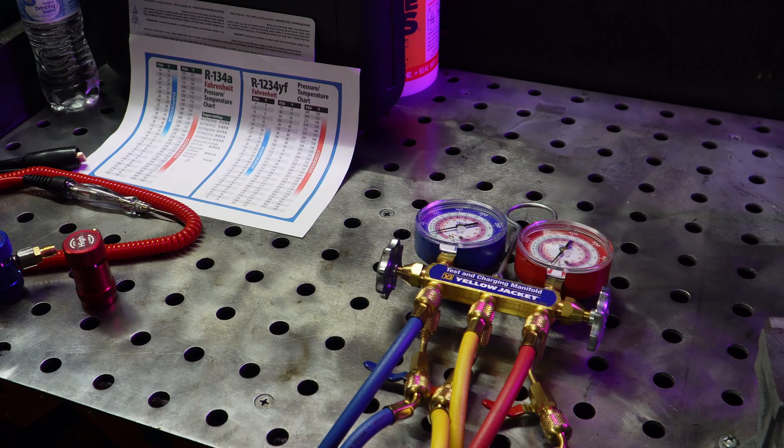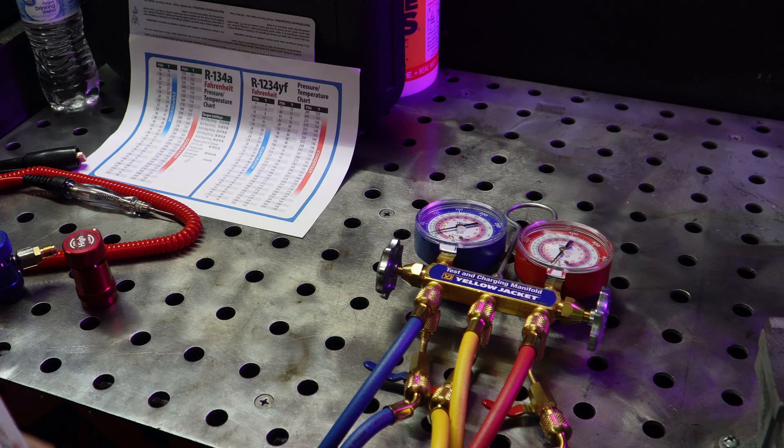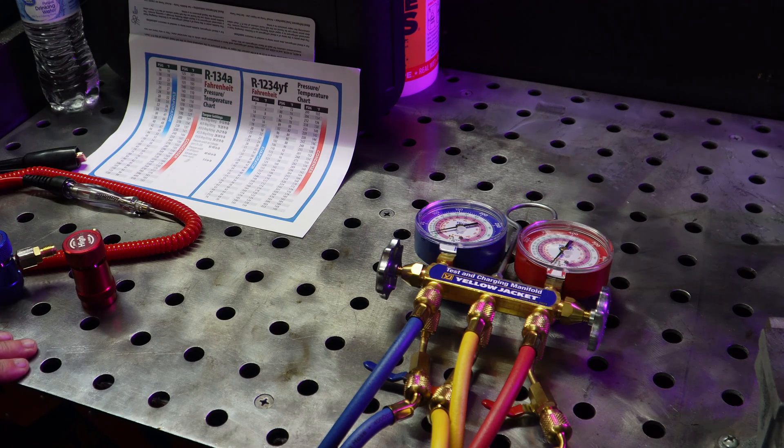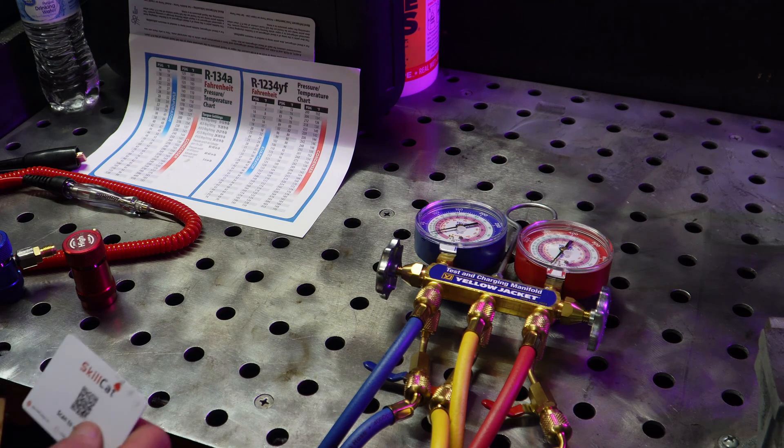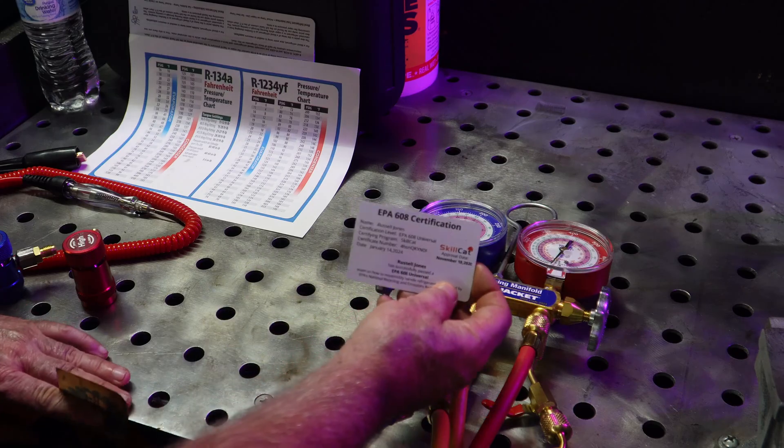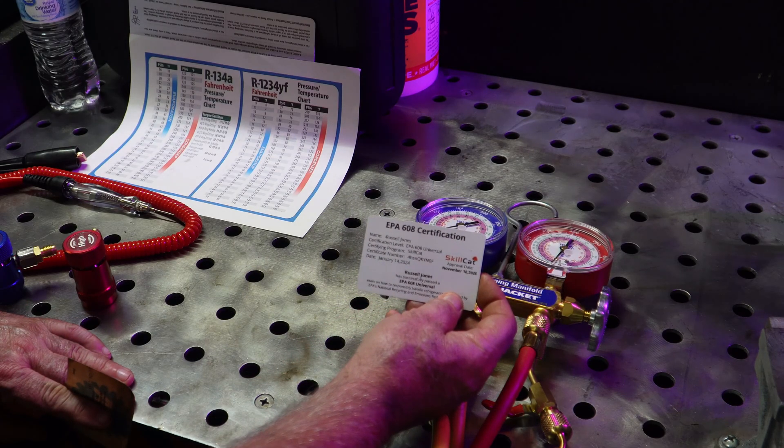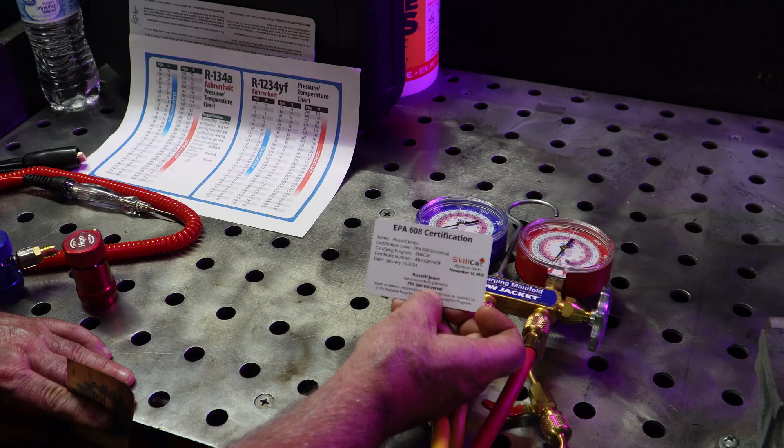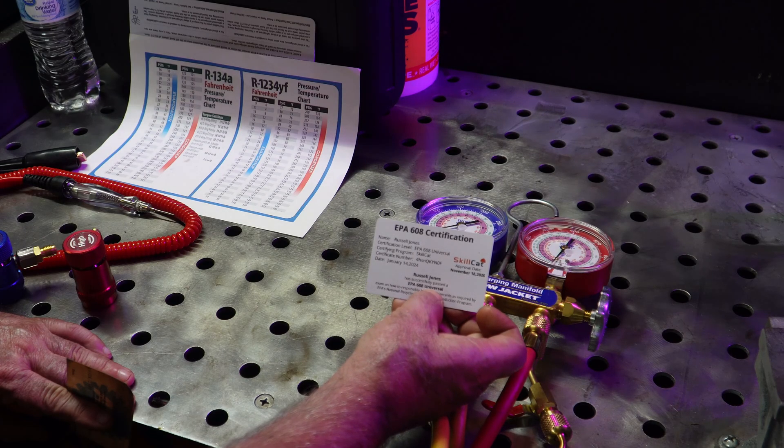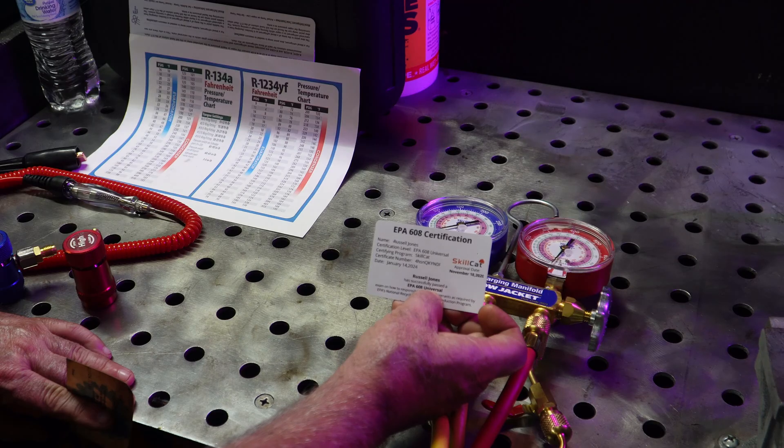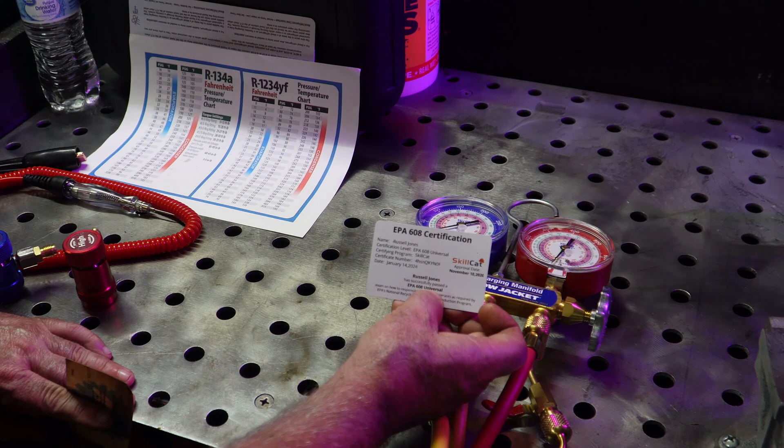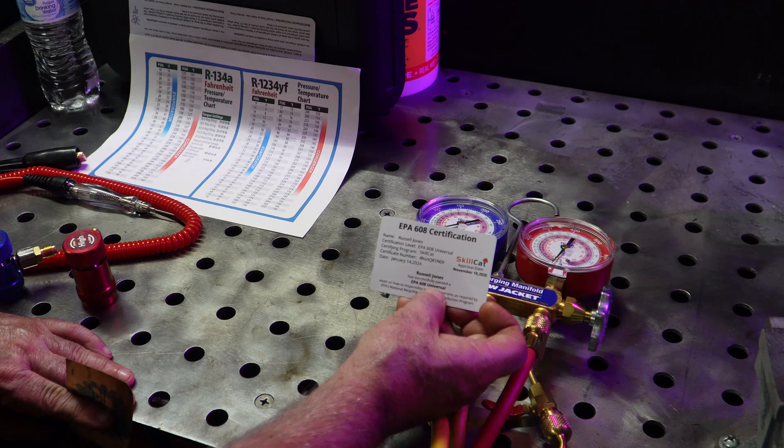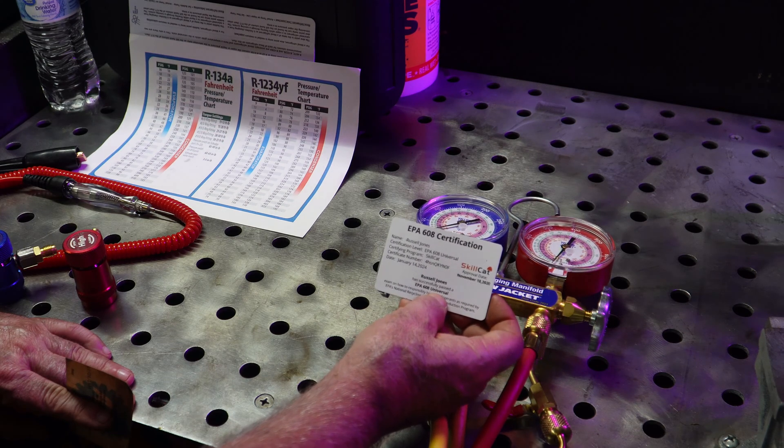That's basically it. If you got any questions, leave them in the comments. Refrigerants, I would say 99.9% of them you cannot buy unless you have a certification through the EPA. I hold an EPA 608 certification and this is a universal. That covers me from small appliances all the way up to industrial like centrifugal chillers and things like that. It just says that I can buy the refrigerants and I can handle the refrigerants, and I'm qualified to do all the recovery.